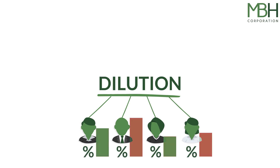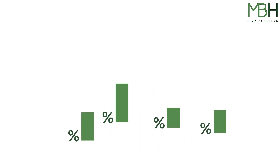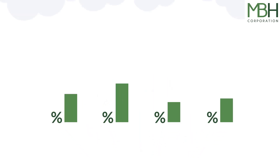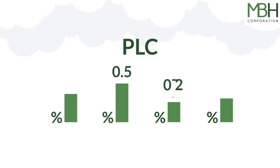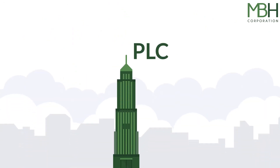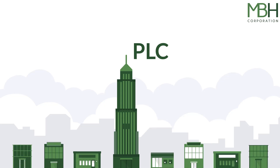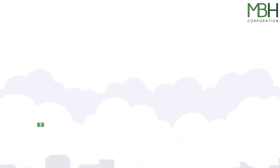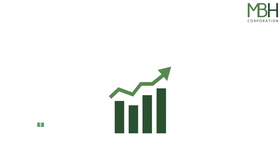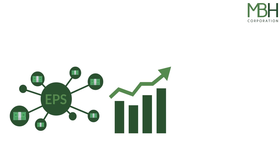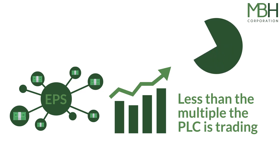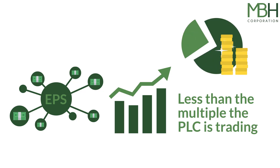As for dilution, existing shareholders of the PLC have been diluted in percentage terms, but the value of their shares has gone up. Percentages are important in small businesses, but in the PLC world the value of your shares is far more important. If the companies the PLC acquires continue to be independently run, the PLC can keep adding more and more companies to the portfolio. As long as each acquisition is EPS accretive — meaning the multiple paid for the small business is less than the multiple the PLC is trading at — the value of all existing shares will continue to increase.